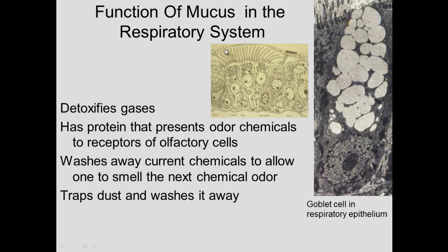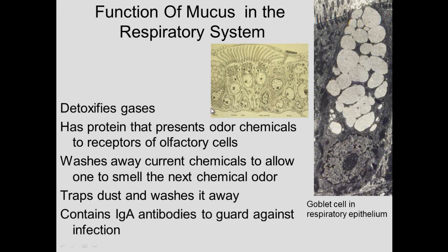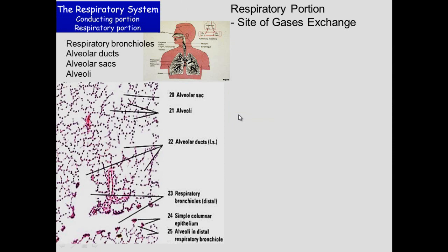Mucus secreted by goblet cells traps dust particles. Ciliated cells then wash the dust away — like a boat being washed out — out of the respiratory system and into the digestive system where it's swallowed. The mucus is also important for guarding against infection through the production of antibodies, as all secreted body fluids contain antibodies.